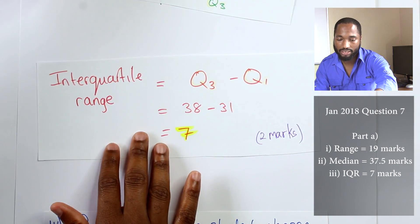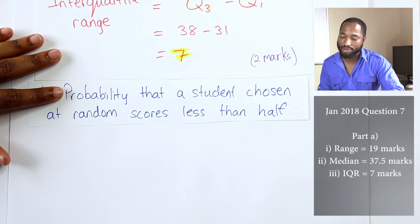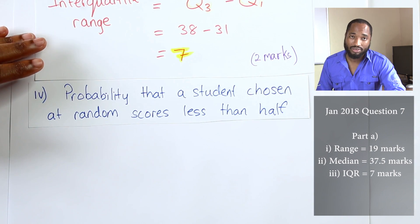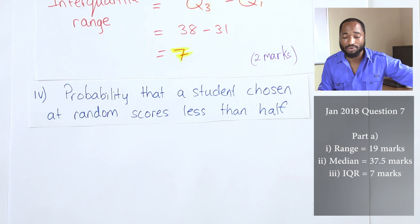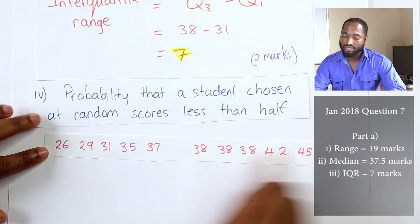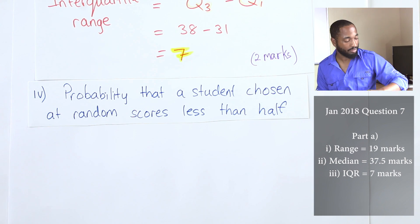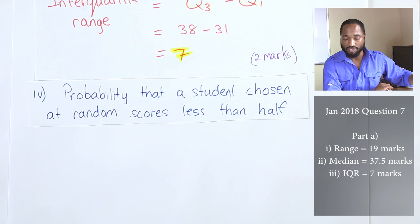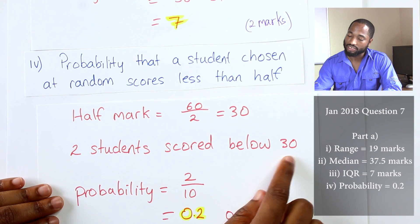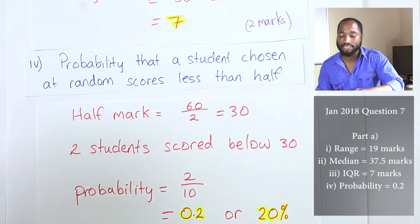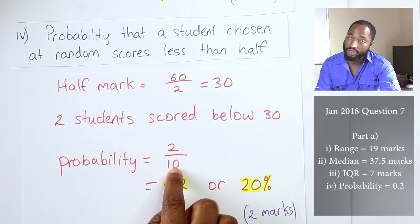In addition, part four we were asked to find the probability that the student chosen at random scores less than half. The total is 60, so less than half is 30. Only two students get less than half, only two score below 30. So the probability is two out of ten, out of the total number of marks. It's the occurrence you want over the total possible occurrences, 0.2 or 20 percent.